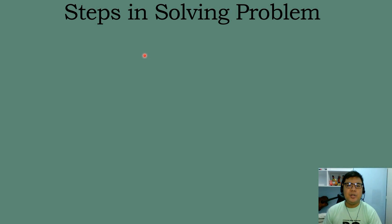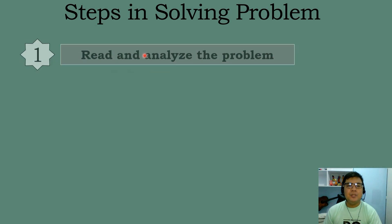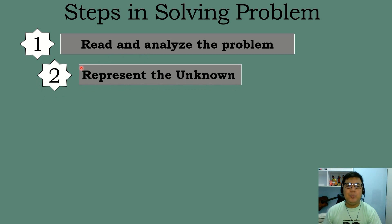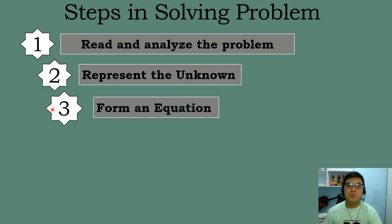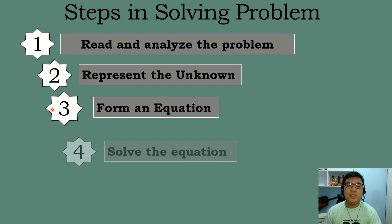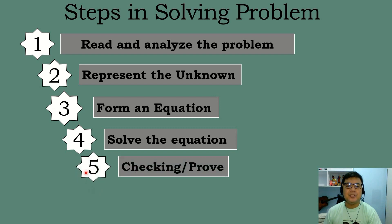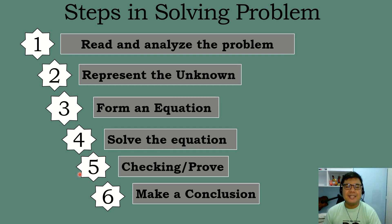These are the steps we need to follow in solving problems involving quadratic equations. First, we need to read and analyze the problem. After that, we need to represent the unknown. The next step is to form an equation. Then we need to solve the equation, check and prove our answer, and finally make a conclusion.